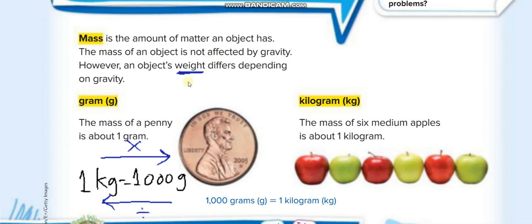Now there are two units of mass: grams, whose short form is g, and kilograms, whose short form is kg. Gram is a small unit, very small unit. The mass of a penny is about one gram, like this small penny, it's about one gram.